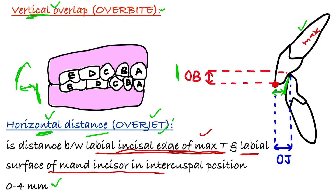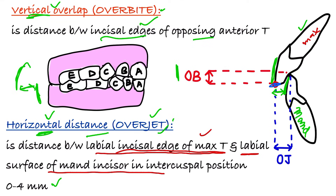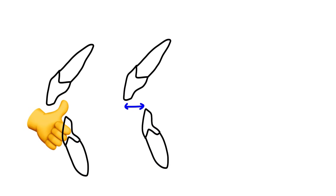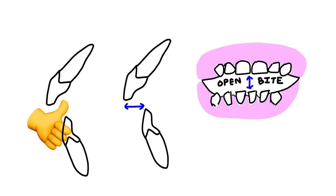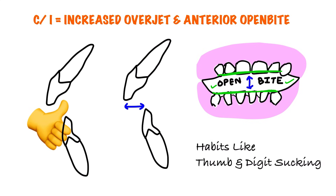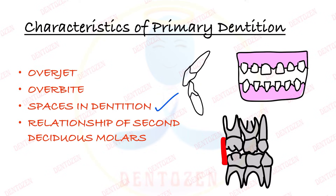Overbite is the vertical overlap — the maxillary teeth overlap the mandibular teeth in a vertical direction, measured between the incisal edges of opposing teeth. So overjet is horizontal and overbite is vertical. The clinical implication: if a child has a thumb-sucking habit, the thumb placed between the teeth increases the horizontal distance, leading to increased overjet and anterior open bite, where space appears between maxillary and mandibular anterior teeth.